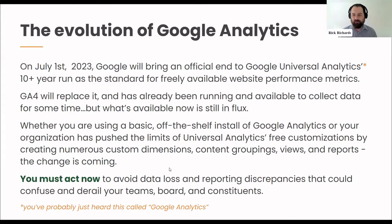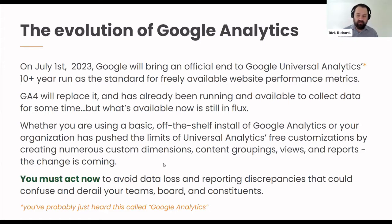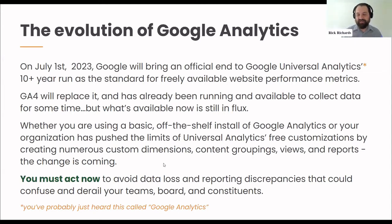GA4 is going to replace Google Universal Analytics next summer, and it will be gone for good. We're currently in the sunsetting phase where you can use both platforms, which is a recommended approach from us and from Google. Whether you're just using something basic or you've really pushed the limits of Universal Analytics with custom metrics and custom reporting — unless you're paying for a 360 account, it ends July 1st, 2023.